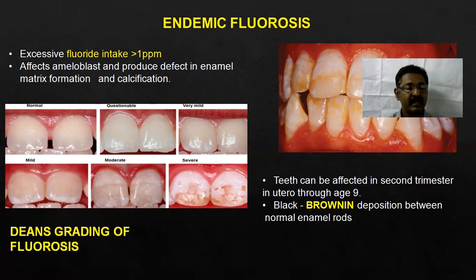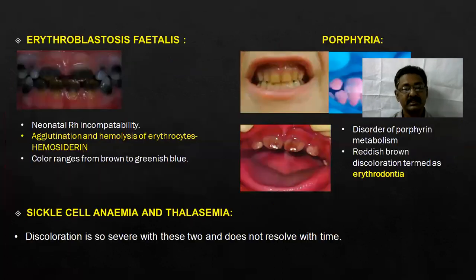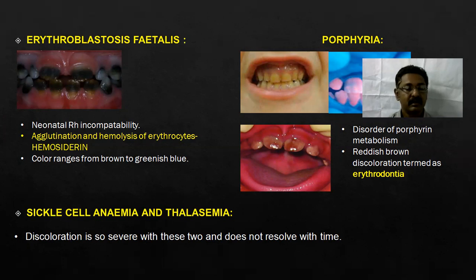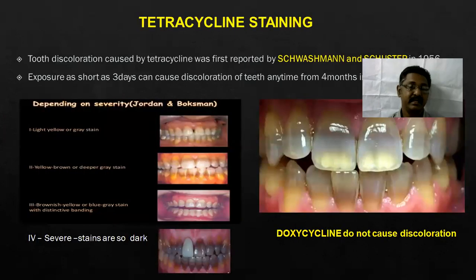These are the different gradings — Dean's gradings for fluorosis. Erythroblastosis fetalis — that is a neonatal RH incompatibility. Agglutination and hemolysis of erythrocytes forms bilirubin. Color ranges from brown to greenish blue. Porphyria, another clinical condition, and sickle cell anemia and thalassemia — all these are causes for intrinsic staining.